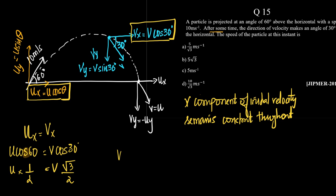So what do we get v as? We get v equals u divided by root 3. Therefore, v equals 10 by root 3, since u is given as 10. This gives us the correct option as option D.